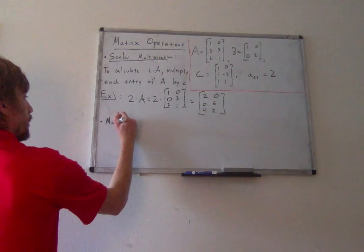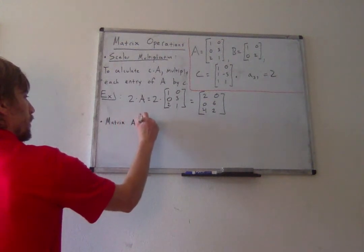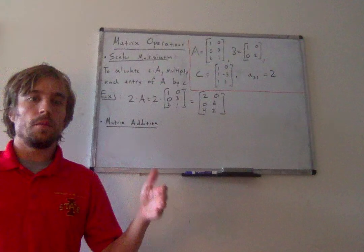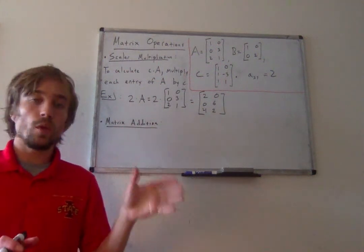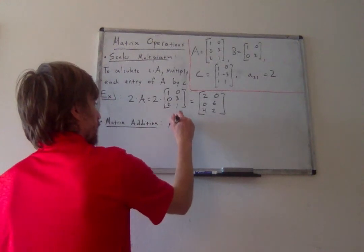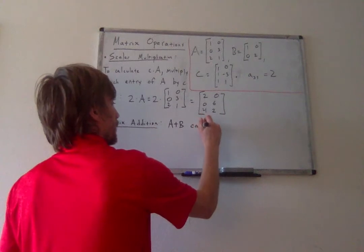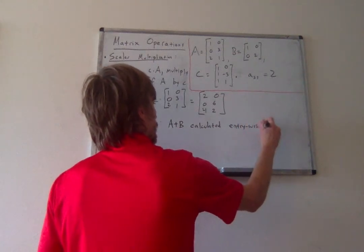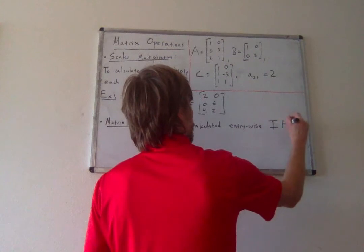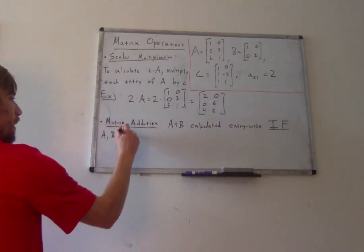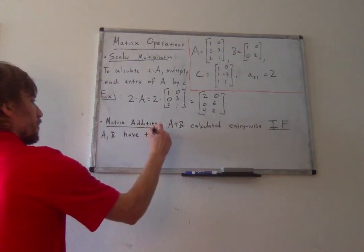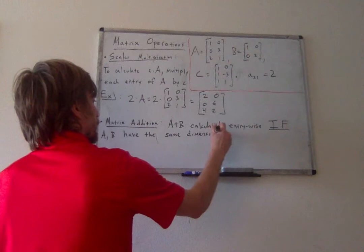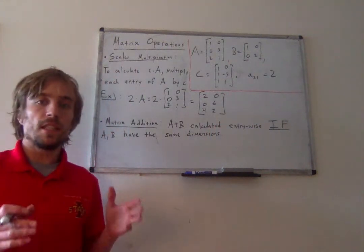So matrix addition, what we do is we add entry-wise, so we add the same entries of two matrices with the same dimension. So much like with vectors, we can only add matrices if they have the same dimensions.